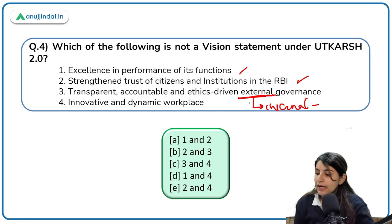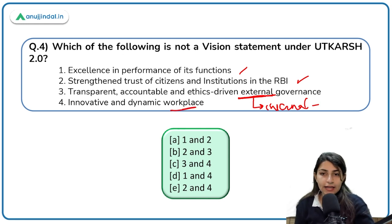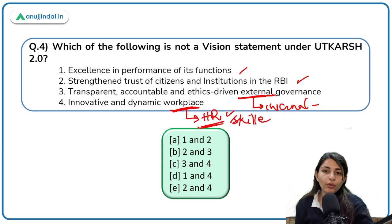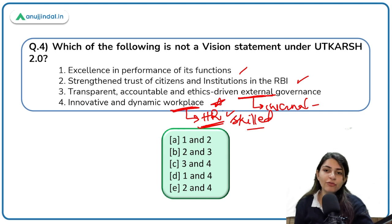The core purpose of Utkash 2.0 is to foster monetary and financial stability, keeping in mind the objective of growth, and to ensure development of an efficient, inclusive financial system. One of the six vision statements relates to innovative and dynamic HR — bringing skilled human resources. This was one of the six vision statements.